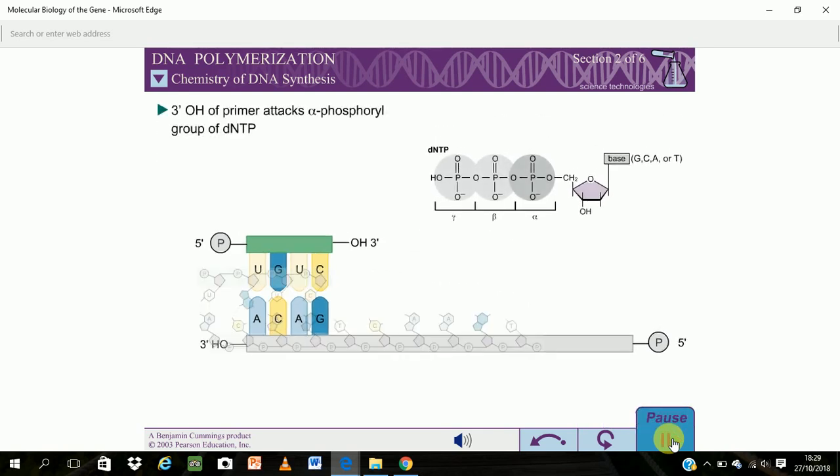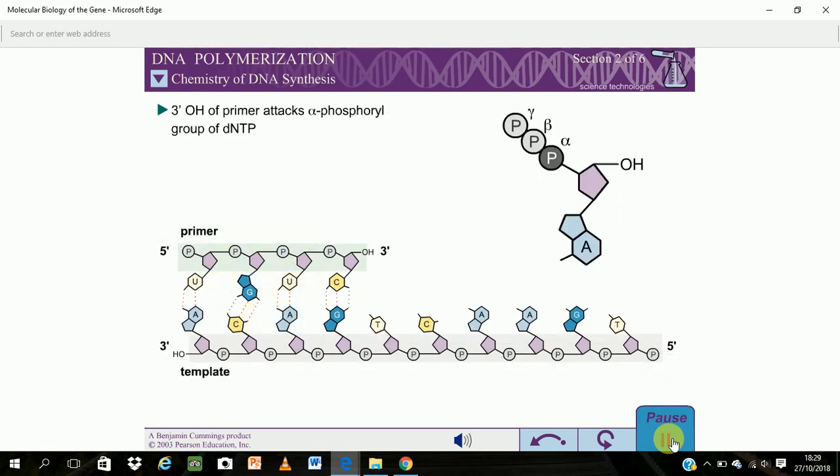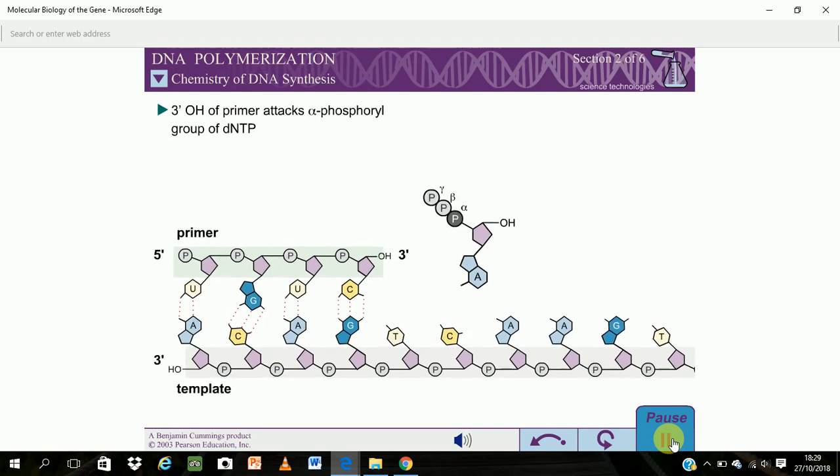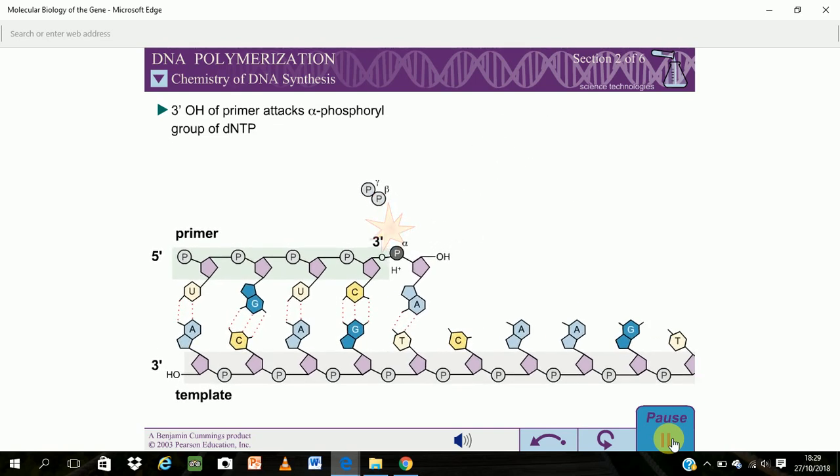The 3' hydroxyl of the primer strand attacks the alpha phosphoryl group of the incoming DNTP in a nucleophilic substitution reaction. The leaving group for the reaction is pyrophosphate, which is formed from the beta and gamma phosphoryl groups of the DNTP.